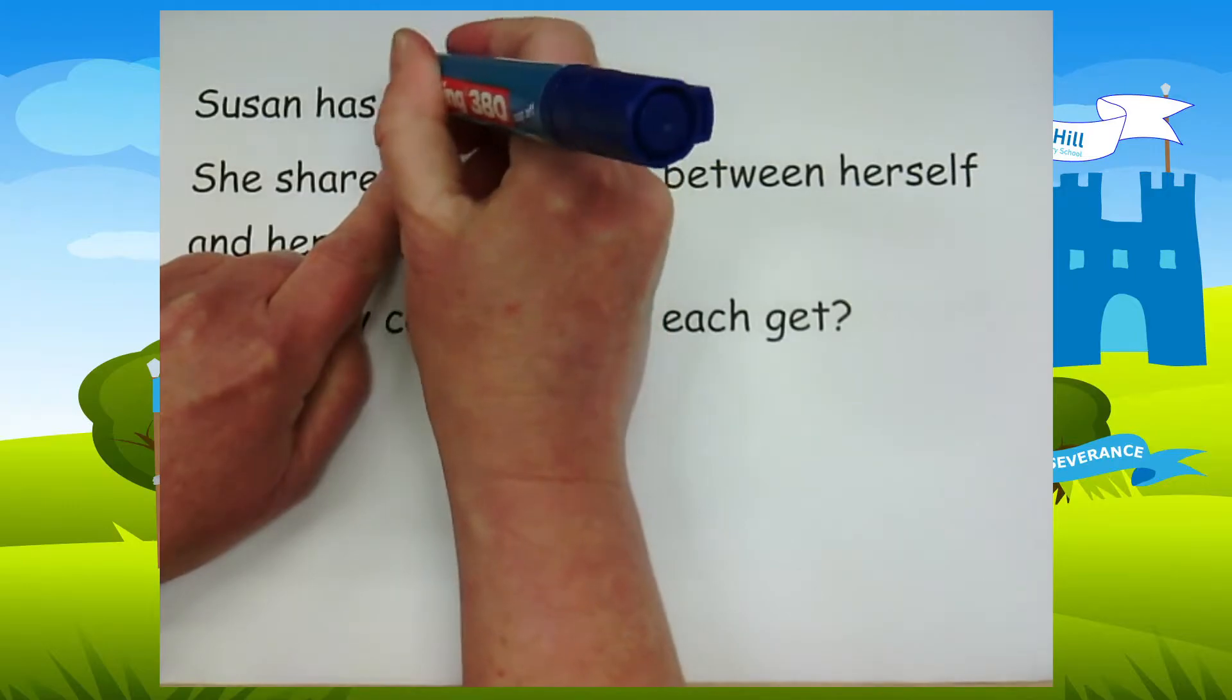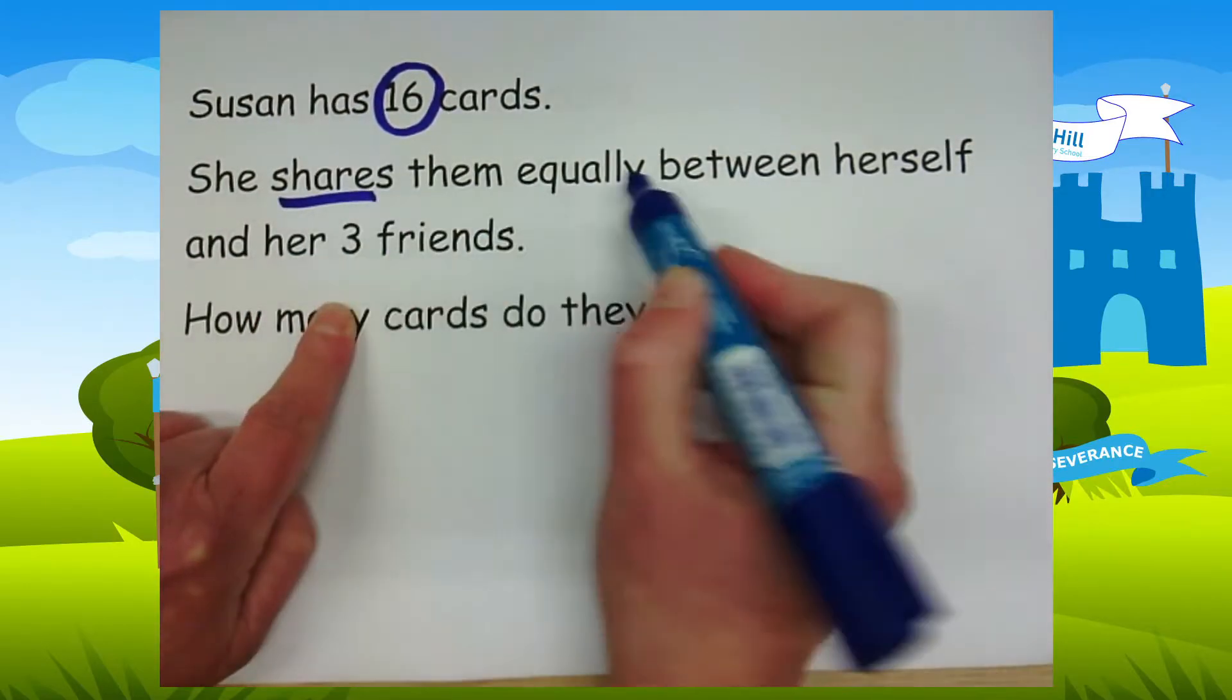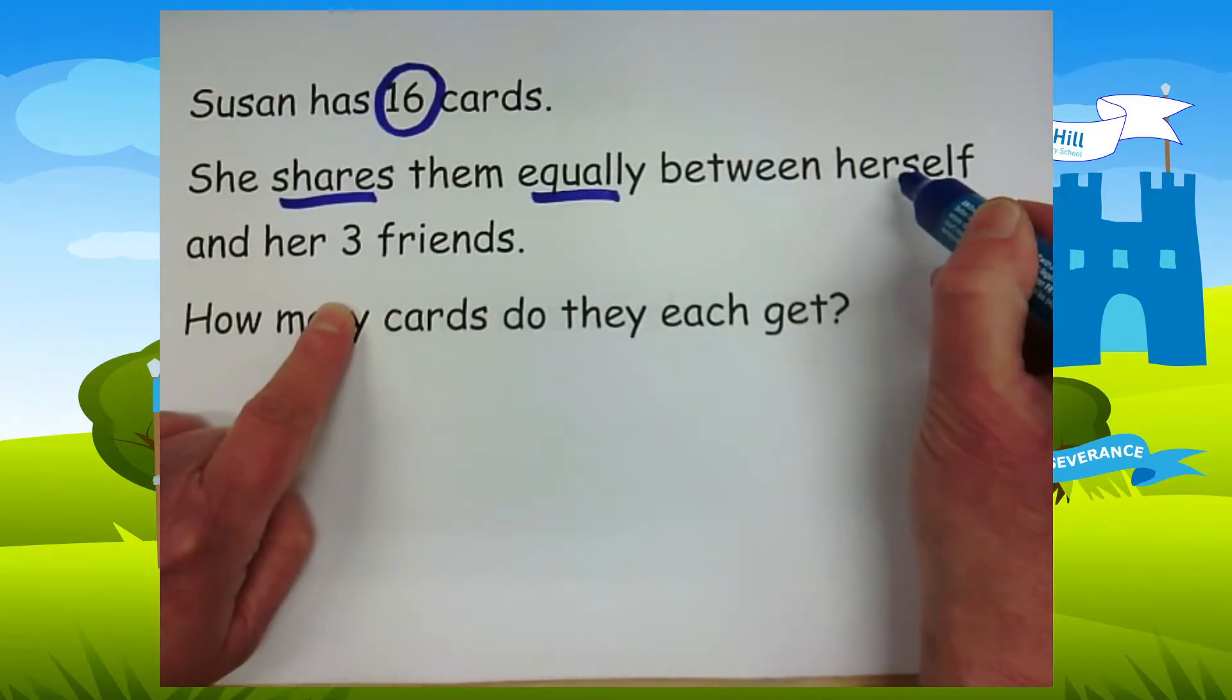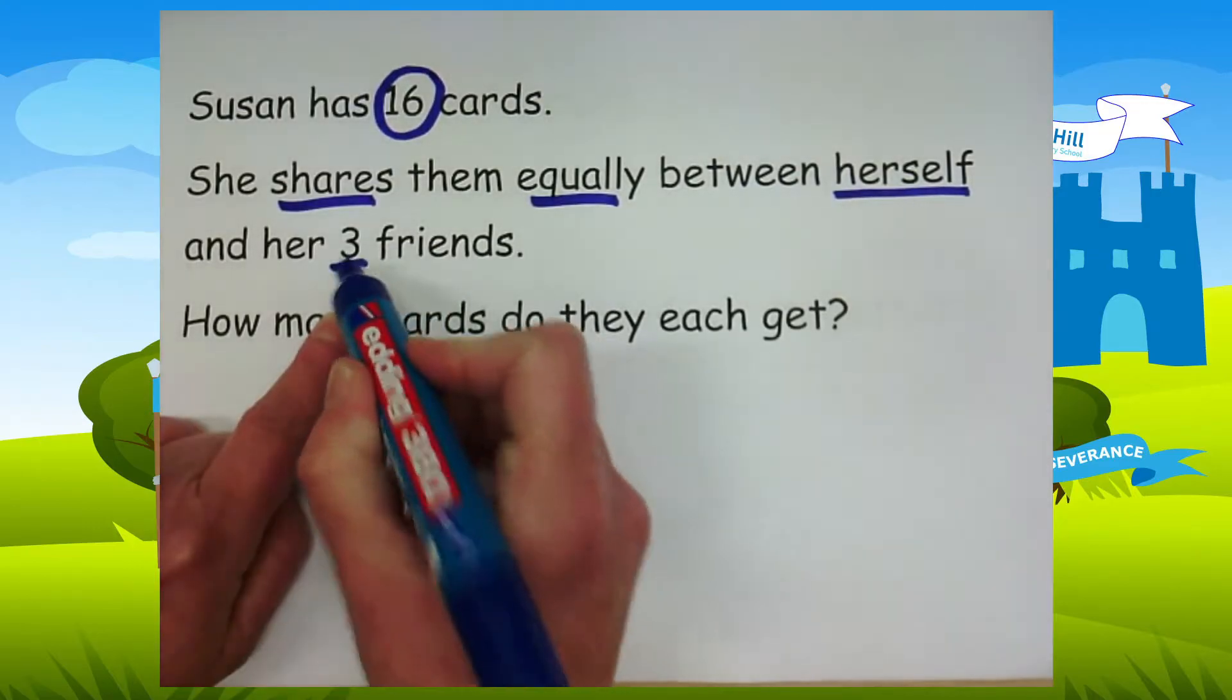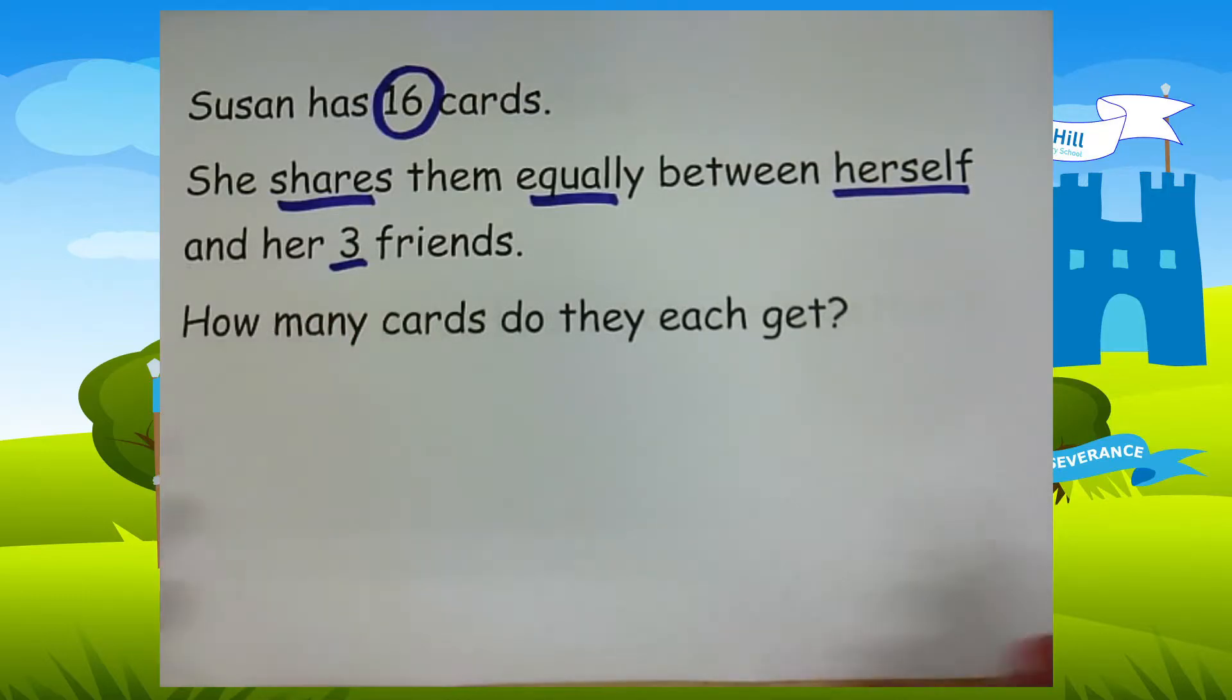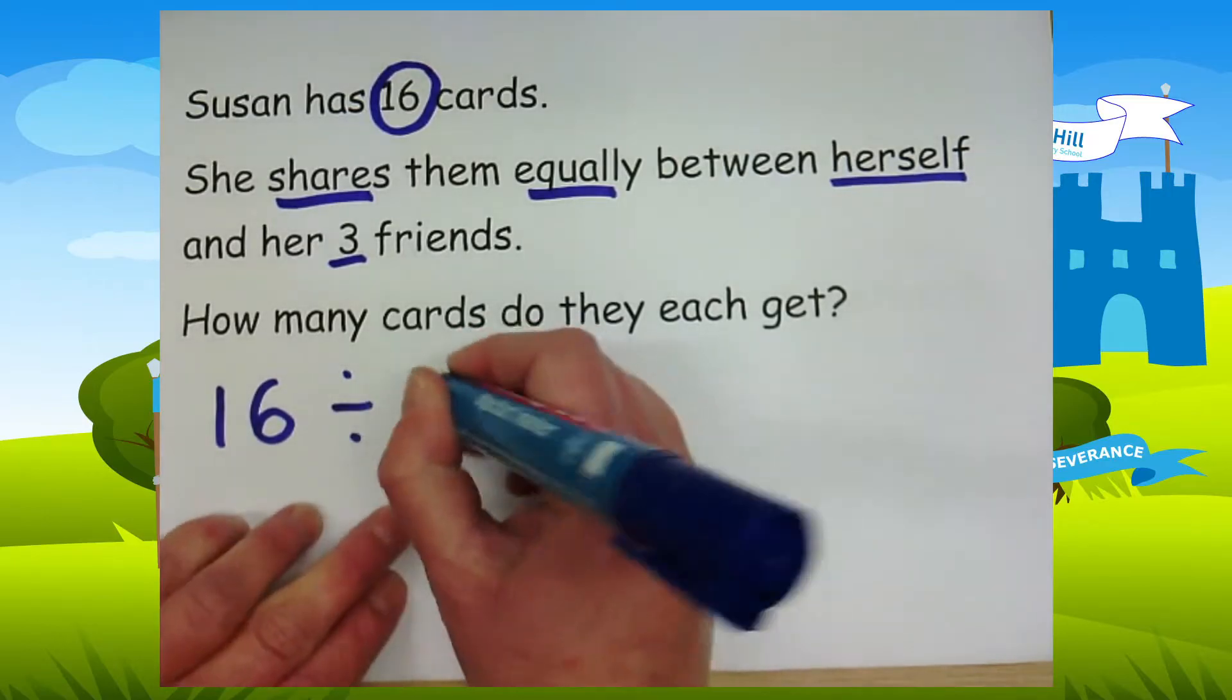Okay, so we know she's got sixteen cards. We know she needs to share them equally. So sharing means divide. So we know it's a division question. So she's going to share them equally between herself and her three friends. So we're not just sharing by three, we need to include Susan as well. So we're going to share by four. So we've got sixteen divided by four.